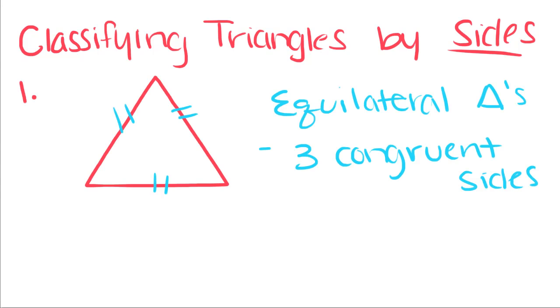The first type of triangle is called an equilateral triangle, and it has three congruent sides. Congruent just means they have equal measures.